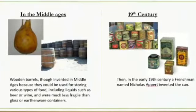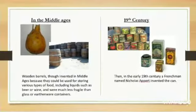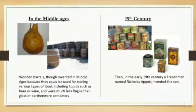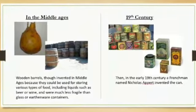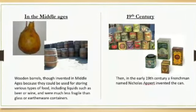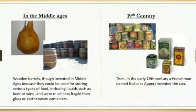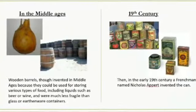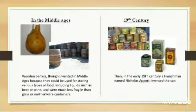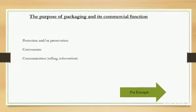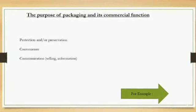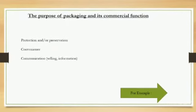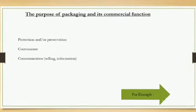Then in the early 19th century, a Frenchman named Nicholas Appert invented the can. The purpose of packaging and its commercial function covers three types: first, protection and/or prevention; second, convenience; third, communication and selling information.